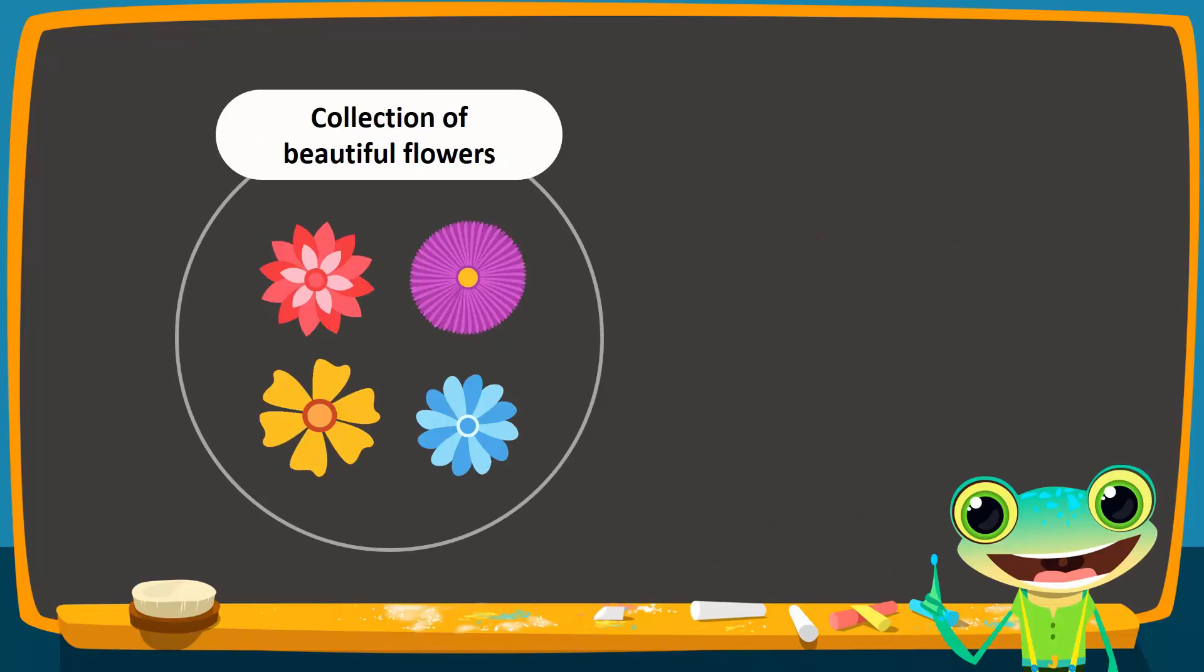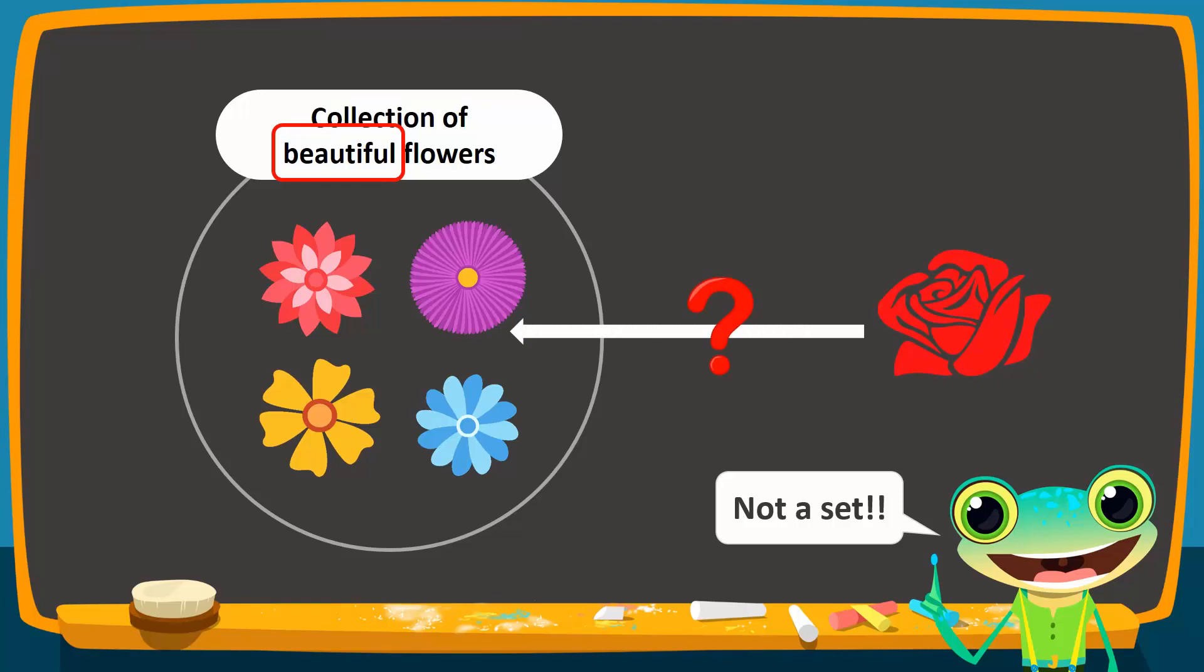Now consider this example: a collection of beautiful flowers. This is not an example of a set because the word beautiful means different things to different people. For instance, some people may say that a rose is beautiful, while others may feel that a rose is not beautiful. Therefore, the property of beautiful is not well-defined. To make this into a set, we can remove the word beautiful, so we end up simply with a set of flowers. Can you think of any examples of sets in your daily life? How about collections that are not sets?